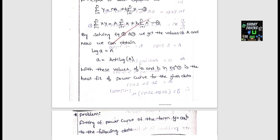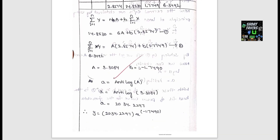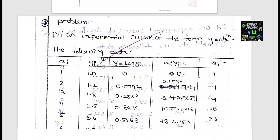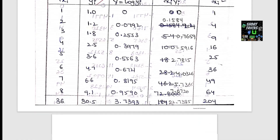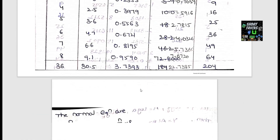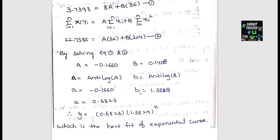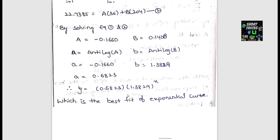For the power curve y = ax^b, the normal equations take the same form after transformation using logarithms. For the exponential curve, we use antilog of the capital variable equivalents. The equation is the best fit for the exponential curve.